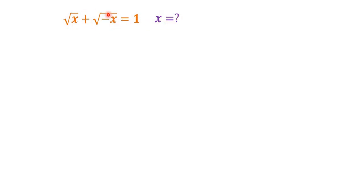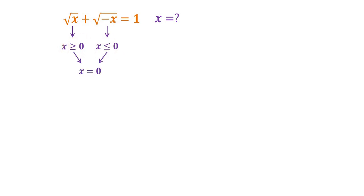I have two radicals here. From square root of x, we know that x is greater than or equal to 0. From square root of negative x, we know that x is less than or equal to 0. With these two conditions, the only solution is x is equal to 0.